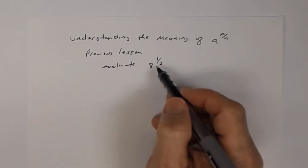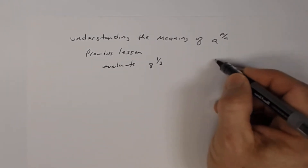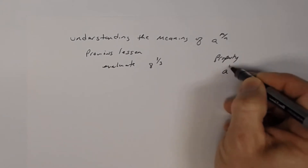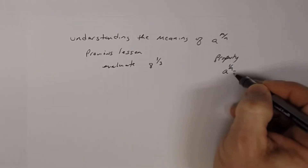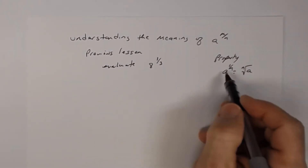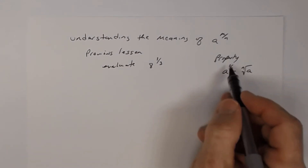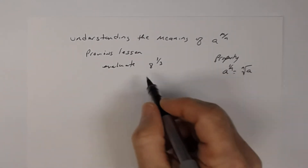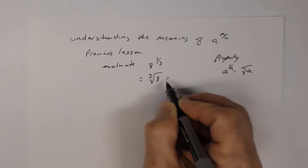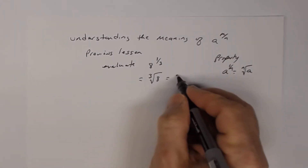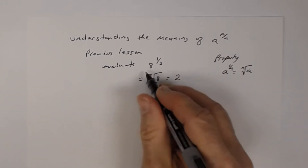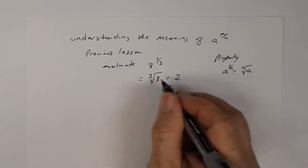So in this case it's 3. Remember, in a previous lesson we used the property that a raised to the 1 over n can be written as a radical — the nth root of a — where the denominator is your index. That property was where the numerator was 1. So I can rewrite 8 to the 1/3 as the cube root of 8, which simplifies to 2, because 2 times 2 times 2 is 8.